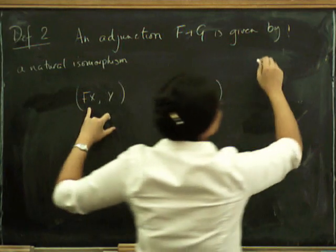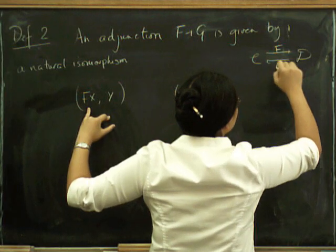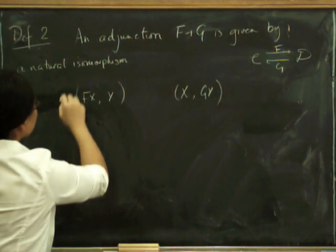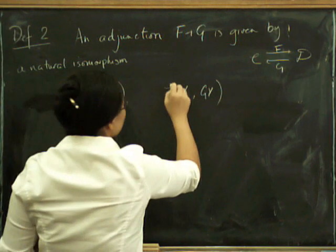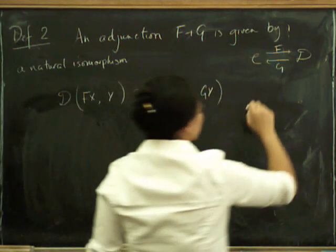I forgot to say where my categories and functors were going. F goes from C to D, so F of X is going to be in D. So these are morphisms in D, these are morphisms in C, and that's a natural isomorphism which has to be natural in X and Y.